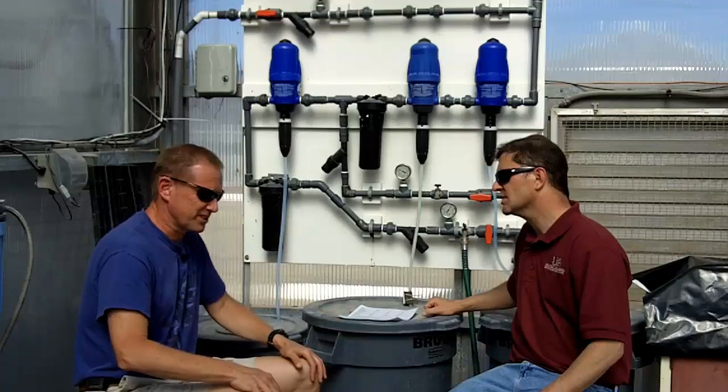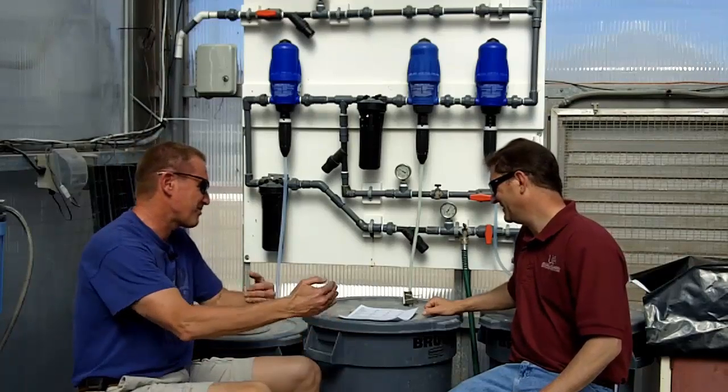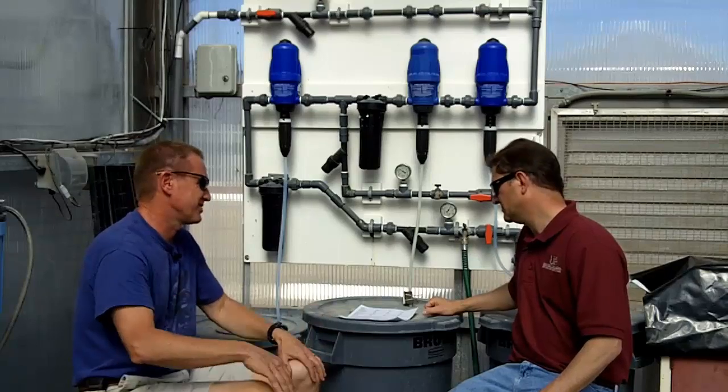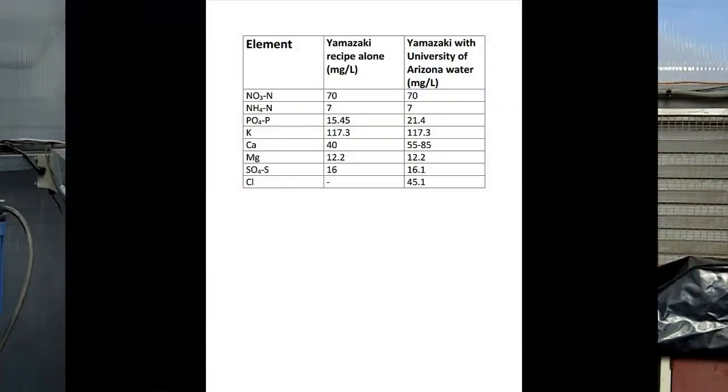Right. Our water sources come from several locations, so we can never be too sure exactly what's in there. But I know that we're within that range, and that range is safe. We're adding 12 parts per million of magnesium, and our sulfate level is about at 16 parts per million. So that's pretty much how Yamazaki looks when we mix it up.